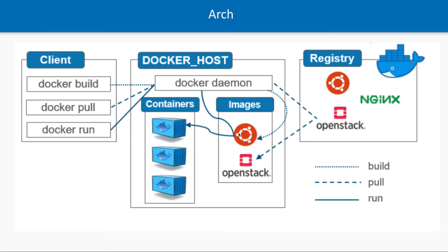So these are the basic terminologies: Docker image, Docker container, Docker registry, Docker Hub, Docker host, Docker daemon process, Docker client, Docker CLI, docker build, docker pull, docker run. We have many available Docker images — Kubernetes, OpenStack, Ubuntu, Redis, MongoDB, MySQL — any service you name is available as a Docker image. You just pull it, run it, and the container is available; then you access that service locally.